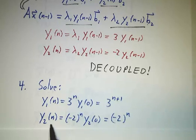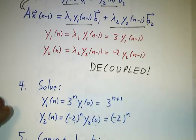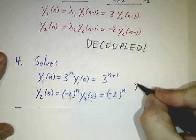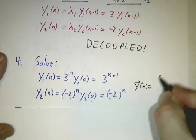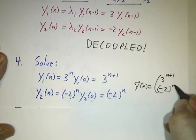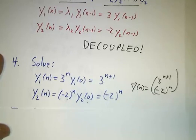y2 is multiplied by negative 2 every day. Okay, we started with the value of 1, so negative 2 to the n times 1 is negative 2 to the n. So, if you will, y at time n is 3 to the n plus 1, negative 2 to the n.